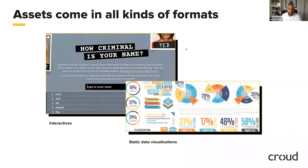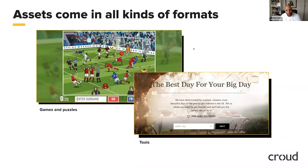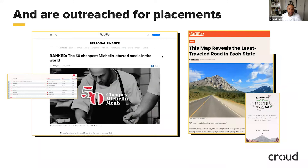Creative assets come in all forms — sometimes we can make interactive assets, static data visualizations, games and puzzles, or tools as well. This is some stuff we've done in the past to show you what it looks like when featured by a news publication. A piece for Traveloka regarding the 50 cheapest Michelin meals was included on Business Insider, and a piece featured on Thrillist called America's Quietest Routes, which we did for a company called Geotab.